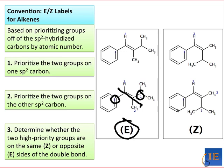On the other hand, in the right-hand structure, the higher priority isopropyl and phenyl groups are on the same side of the double bond. This is an indication that the Z isomer is present.